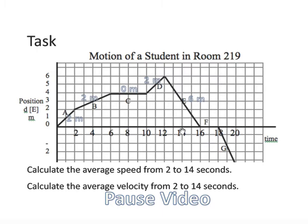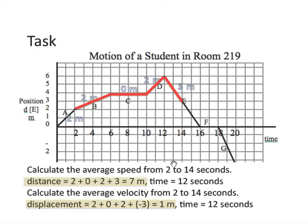Okay. Hopefully you tried that out. And so the distance starts here this time. 2 plus 0 plus 2 plus 3, because we're stopping at 14 seconds. Distance is 7 meters. The time is 12 seconds. And I'll let you do that division of distance over time.